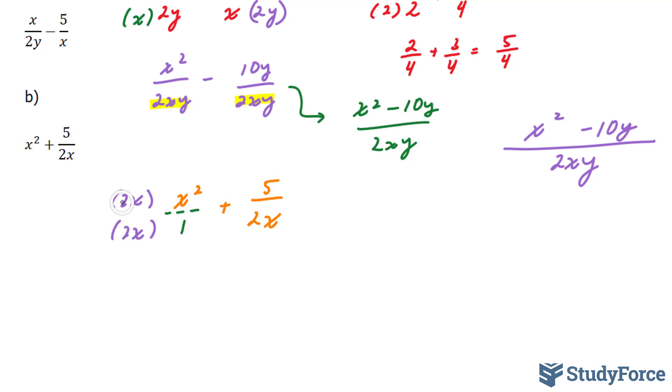And look what happens if I do that. This term times this term gives us 2x to the power of 3. This term times 1 is 2x. I haven't multiplied this denominator by anything, because I don't need to.